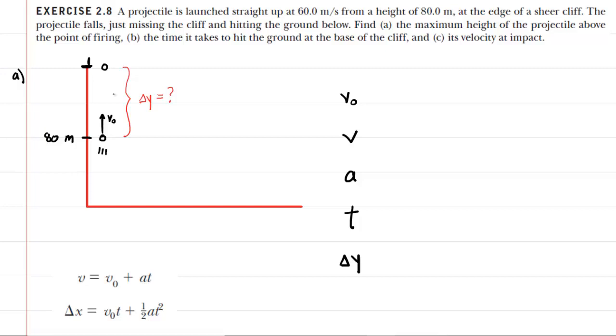After rereading the question, the first thing that you want to do is draw a picture to represent the given information. We have a projectile being launched straight up with an initial velocity of 60 meters per second at a height of 80 meters. And then it's going to rise and it's going to reach a maximum height.